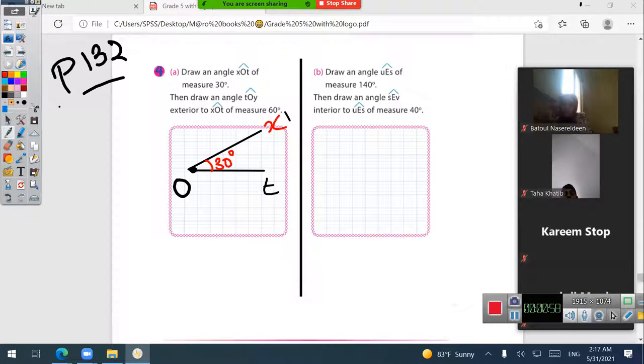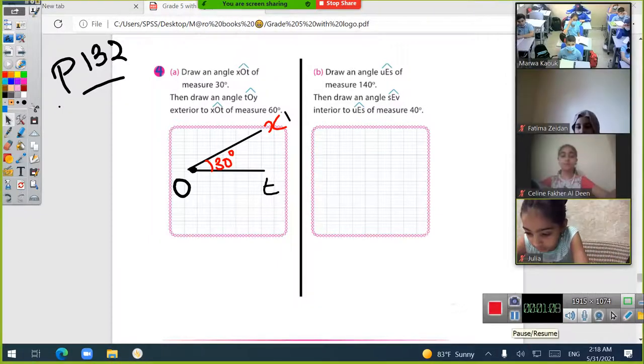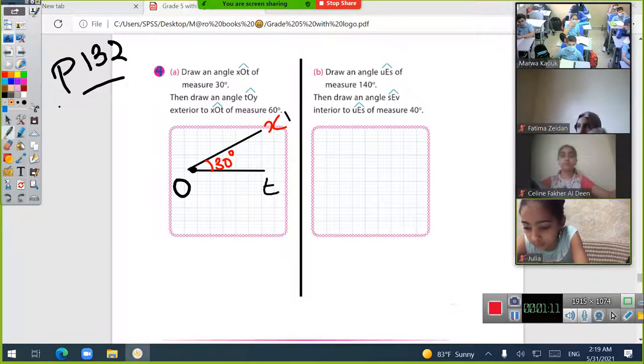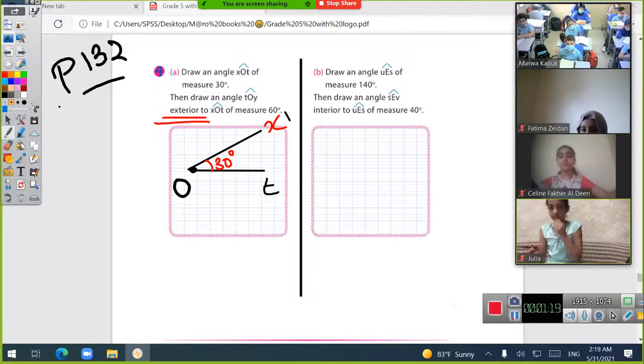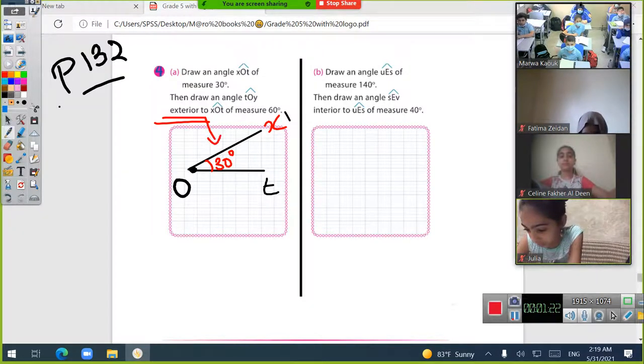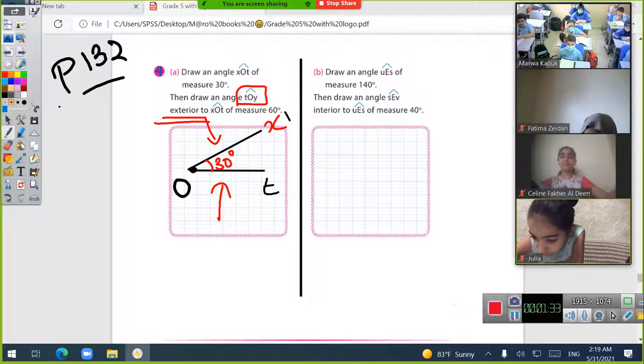Now draw an angle TOI on the exterior, outside the angle. I should draw down. I will color TO and draw from down.